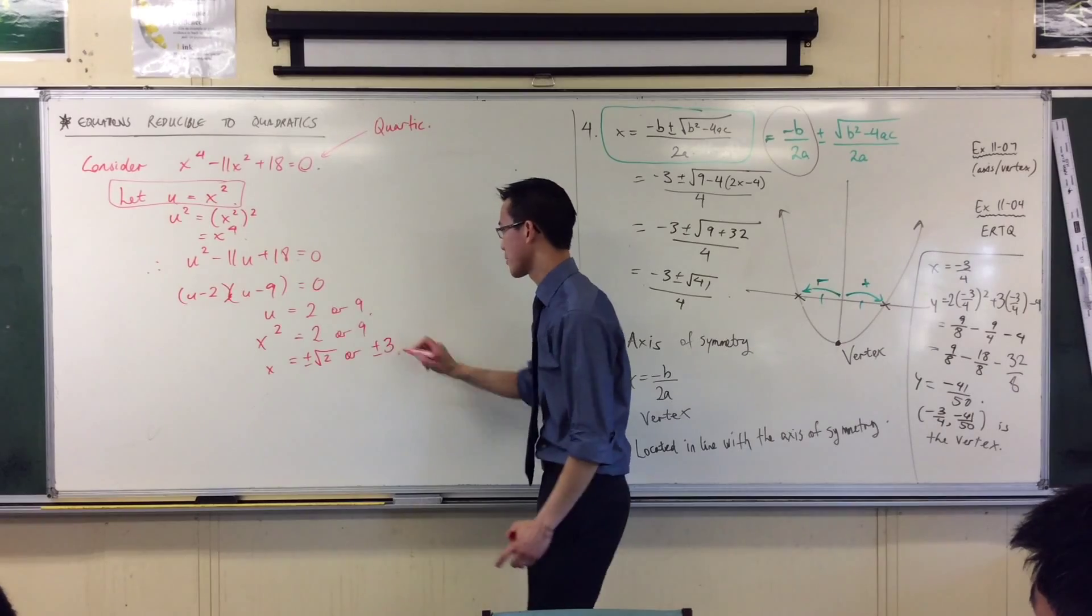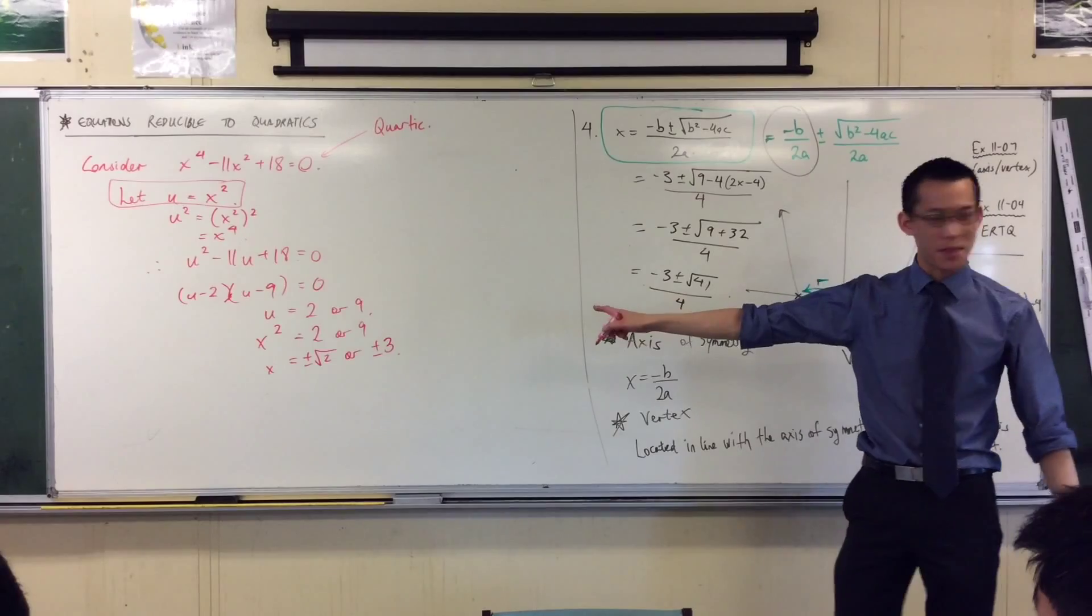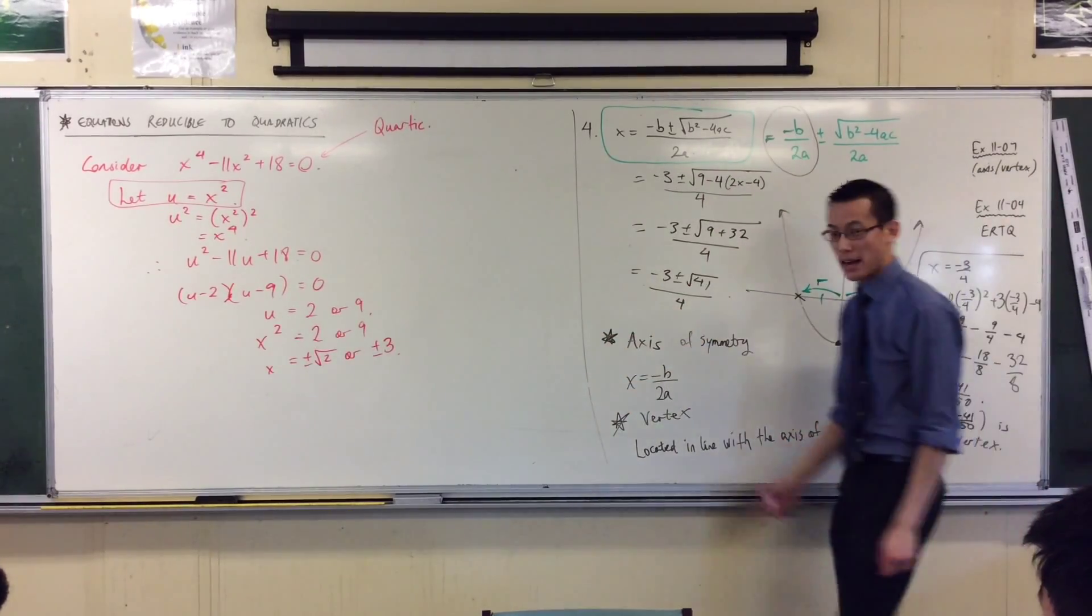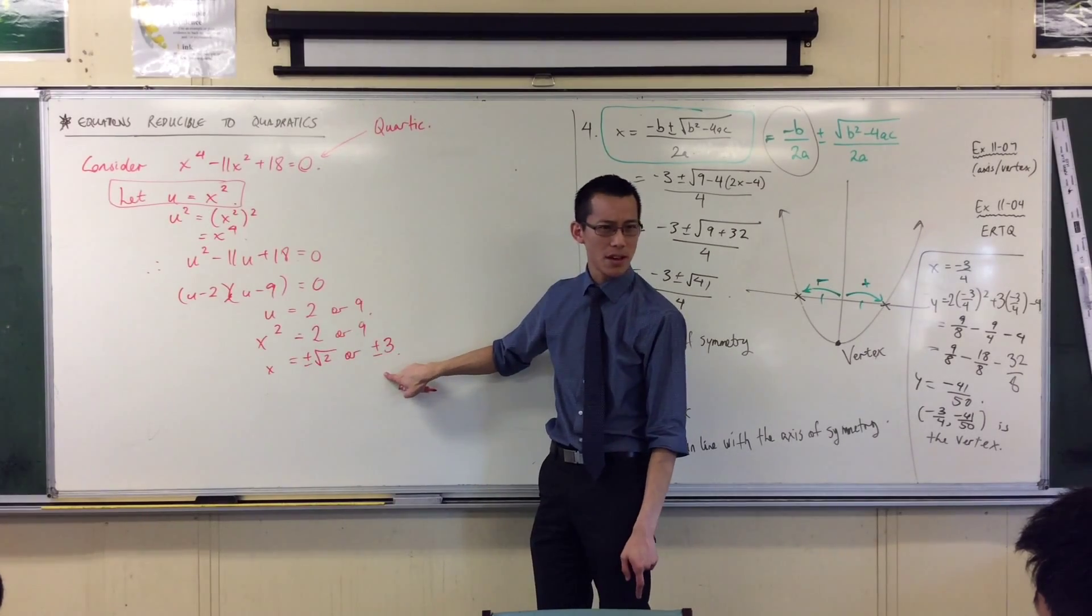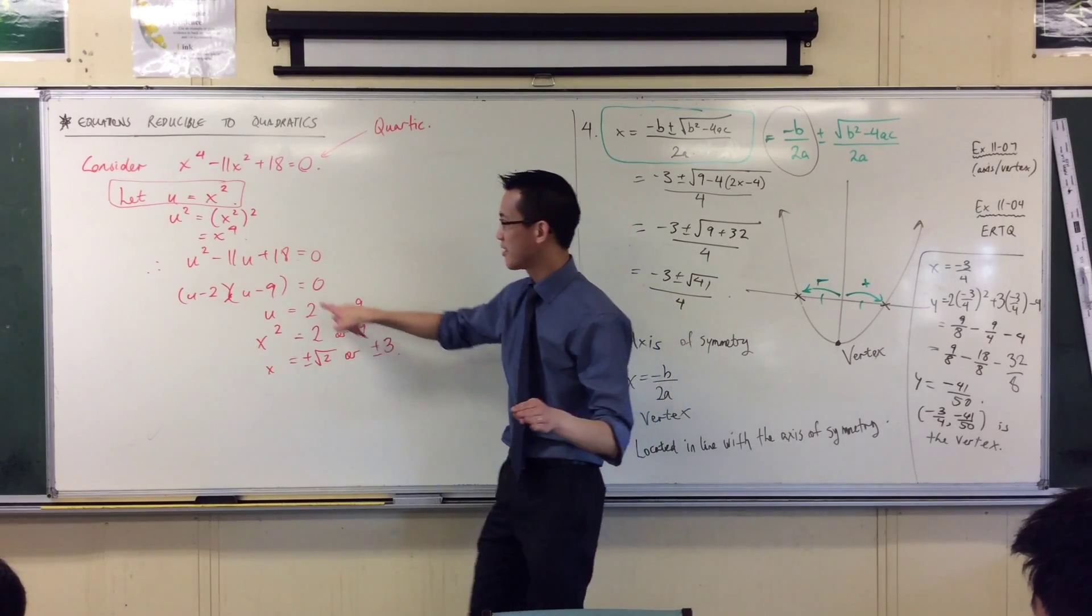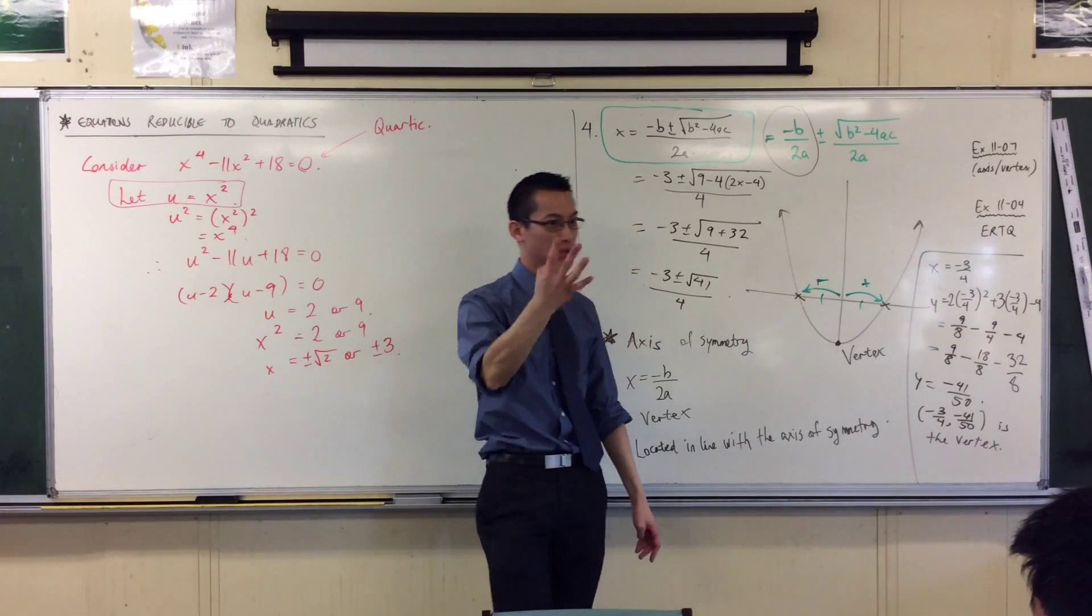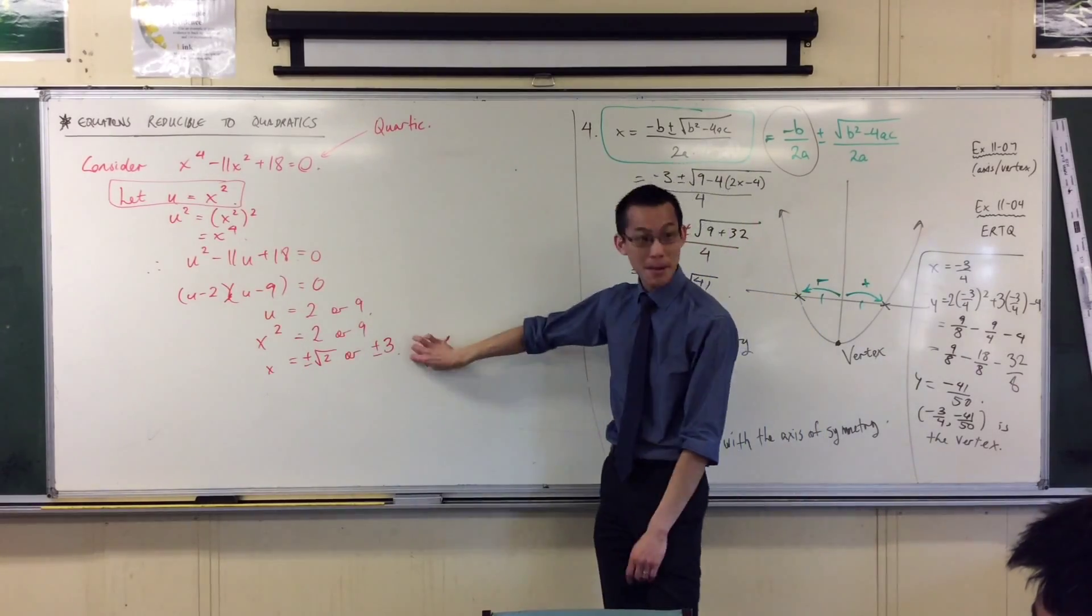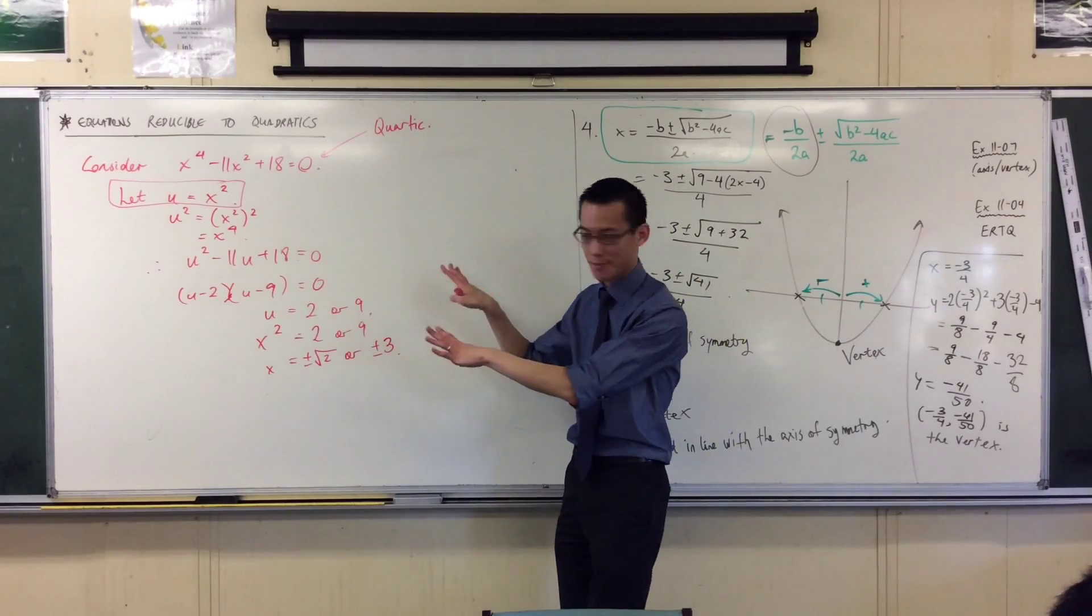Now this is interesting. For quadratics we're used to getting two solutions, but I have counted one, two, three, four solutions. It's kind of weird, but it shouldn't be that surprising because we said this thing is a quartic. In fact, if this was a five you'd get five solutions, if it was a six you'd get six solutions, and on and on.